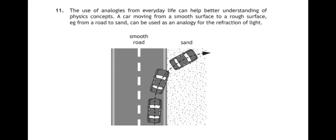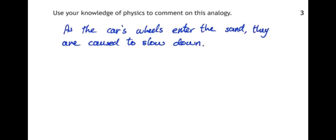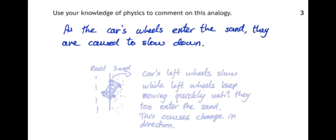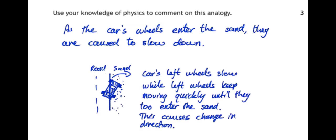And number 11. The use of analogies from everyday life can help better understanding of physics concepts. A car moving from a smooth surface to a rough surface, for example a road to sand, can be used as an analogy for the refraction of light. Use your knowledge of physics to comment on this analogy. Well, as a car's wheels enter the sand, they are caused to slow down. So in this case, the car's right wheels slow while the car's left wheels keep moving quickly until they too enter the sand. That causes a change in direction. So the slowing down of the car causes it to change direction.